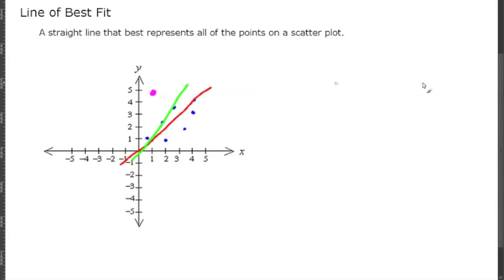Now once you draw your line, you will find your equation in slope intercept form. So y equals mx plus b.